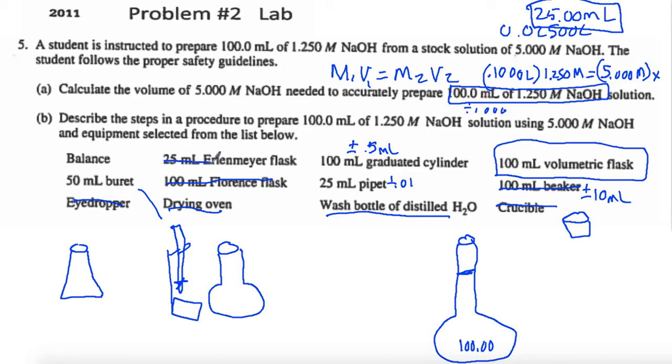Erlenmeyer flask, we don't ever do any measurements in those. We just use them when we're doing titrations. A balance, we're using all liquids here so not really needing that. 50 mL burette. Well if I put something in a 50 mL burette it would definitely give me nice precision. But it's a little more than we need. My suggestion is the pipette. It's more precise than the graduated cylinder and it has a different purpose than the burette. It's more mobile let's say.